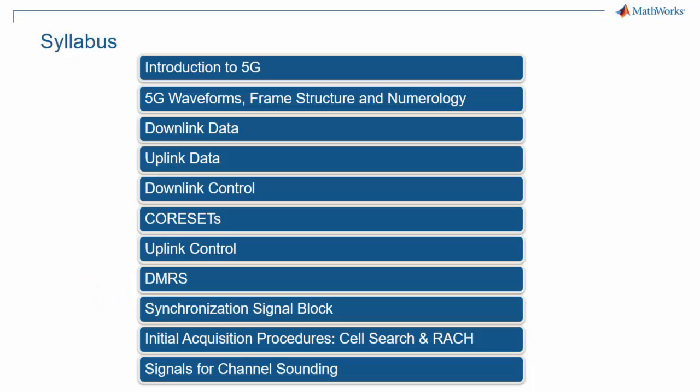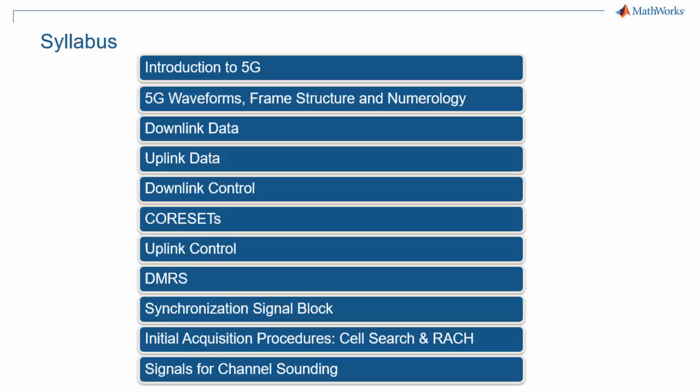A good example of a newly beam-formed channel is the broadcast channel, which is part of the synchronization signal block, or SSB. The SSB plays the same role as the primary and secondary synchronization signals and physical broadcast channel in LTE, but its structure is quite different.